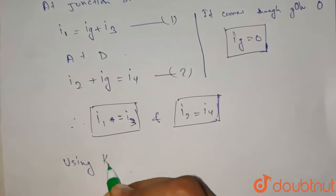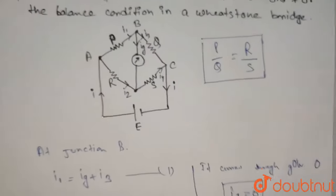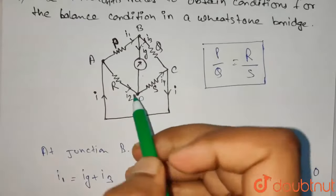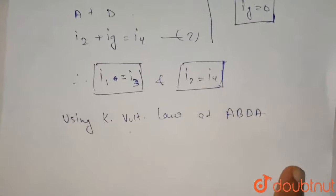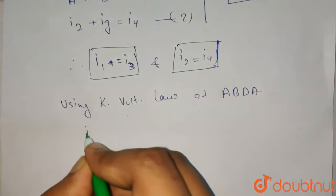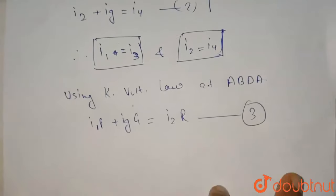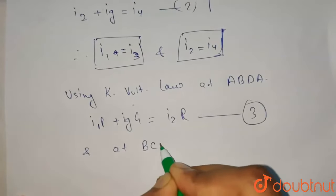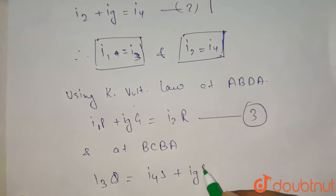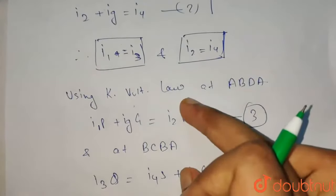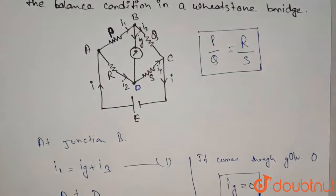We will use Kirchhoff's voltage law. Using Kirchhoff's voltage law at ABDA. By Kirchhoff's voltage law, I1P plus IGG equals I2R. This is equation 3. And similarly at BCDB, I3Q equals I4S plus IGG. These will be our two equations which we get from the voltage loss of these nodes.